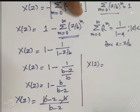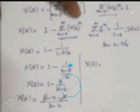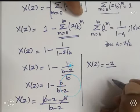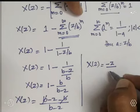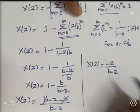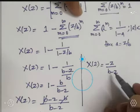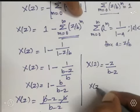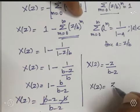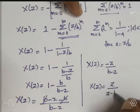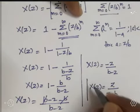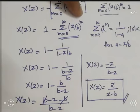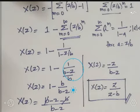The +B and −B cancel, giving X(Z) = −Z/(B−Z). Multiplying numerator and denominator by −1, we get X(Z) = Z/(Z−B). This is the Z-transform for the negative time exponential sequence.